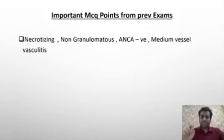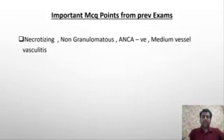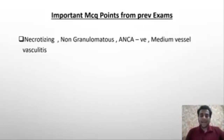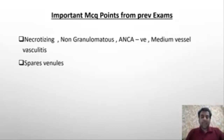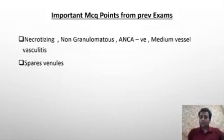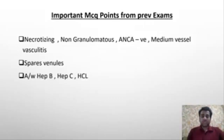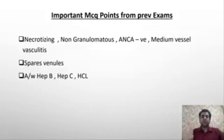Polyarteritis nodosa is a necrotizing, non-granulomatous, ANCA-negative, medium vessel vasculitis. It spares the capillaries because it is a medium vessel vasculitis. It involves the visceral arteries and their branches, and it is associated with the triple H: hepatitis B, hepatitis C, and hairy cell leukemia.